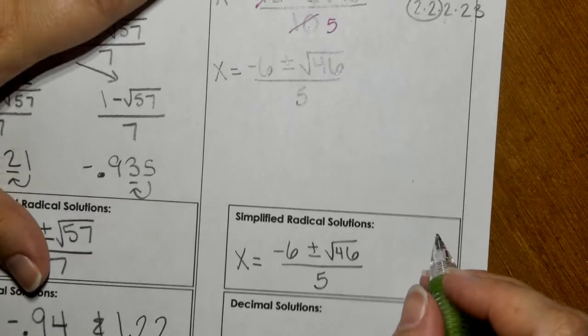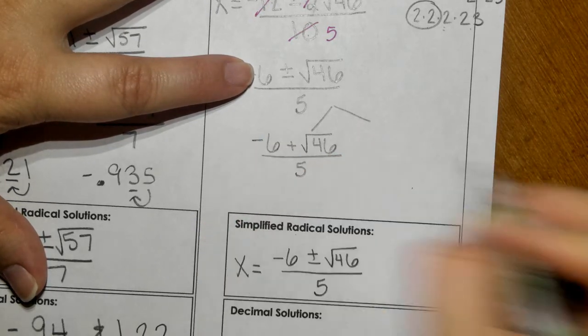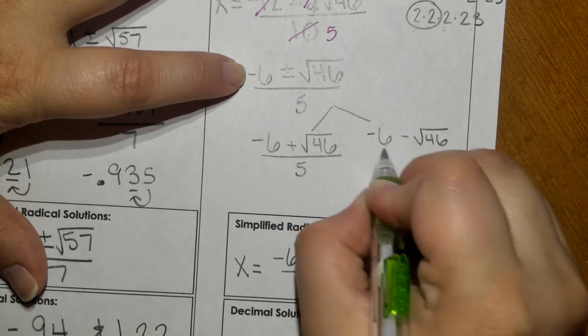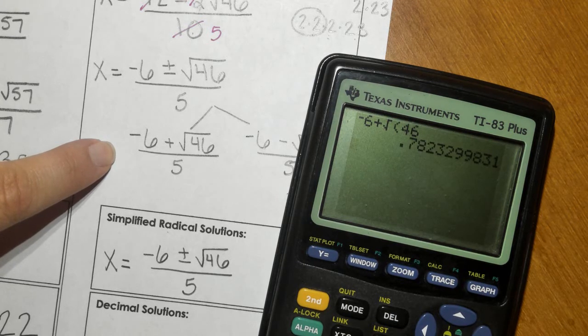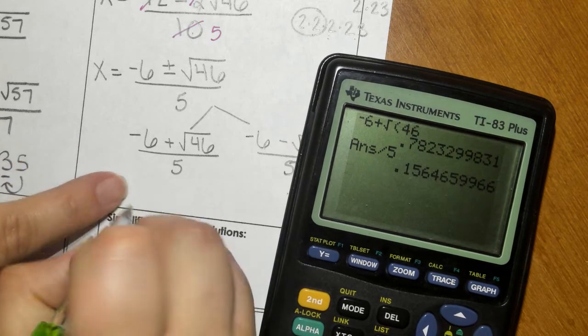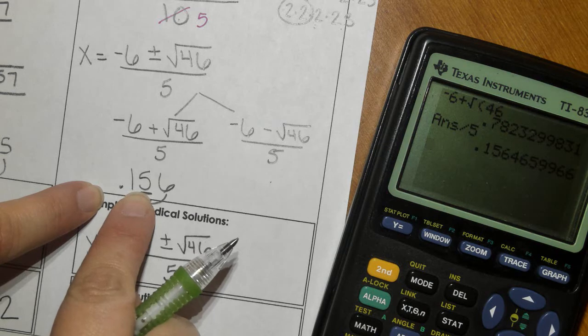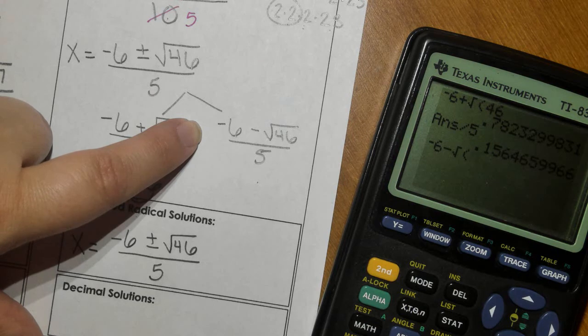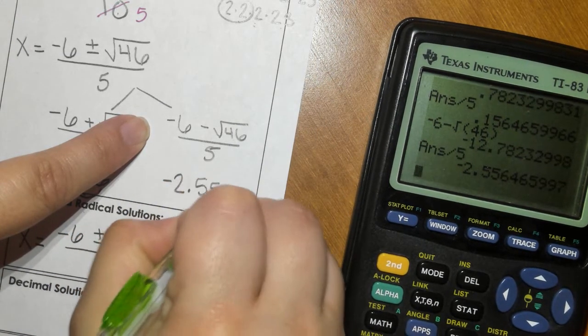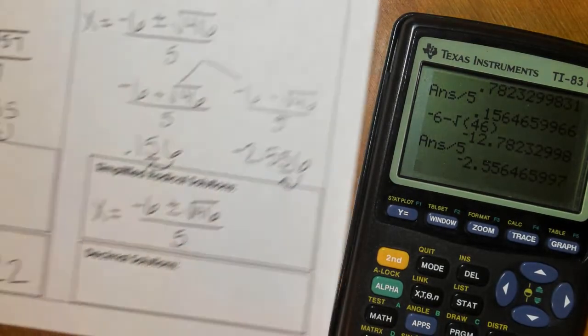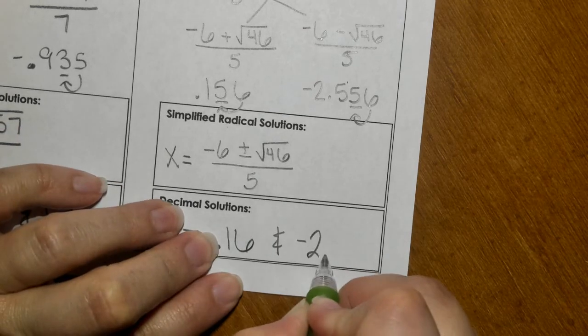Now to figure out our decimal solutions, remember that we have to write out our two ways. So negative 6 plus the square root of 46 divided by 5, and negative 6 minus the square root of 46 divided by 5. So let's plug it in. Negative 6 plus the square root of 46 divided by 5. So 0.156. Obviously, that is going to round up. 6 will make that a 6. Here, negative 6 minus the square root of 46 divided by 5 is negative 2.556. So when we round to the nearest hundredth, we would have 0.16 and negative 2.56.